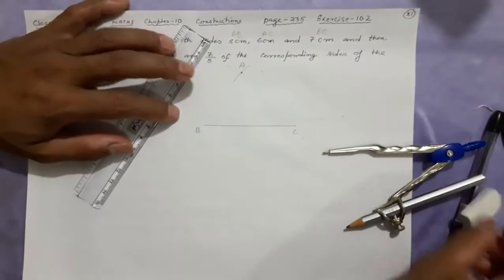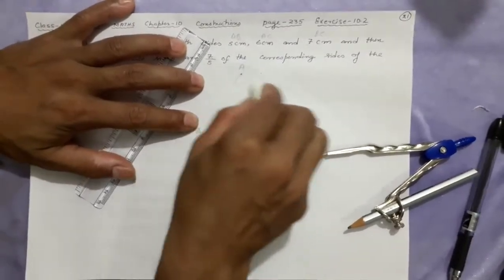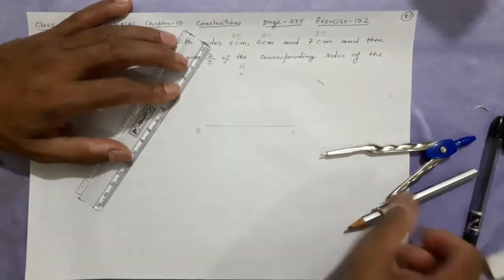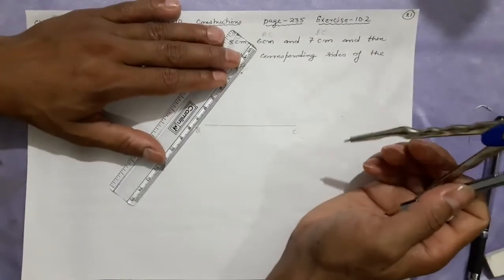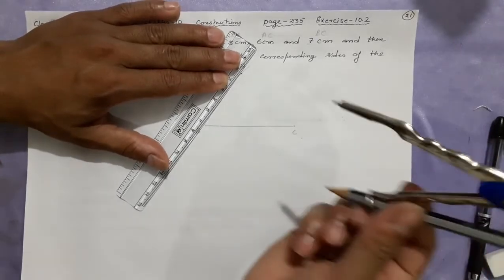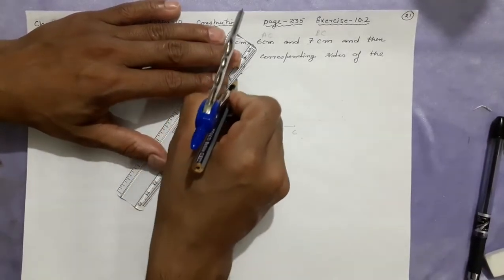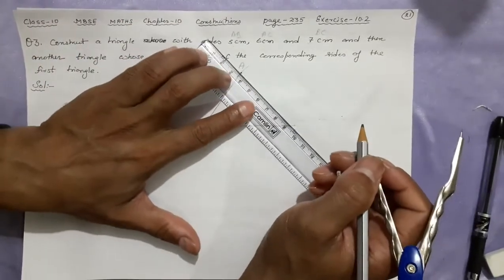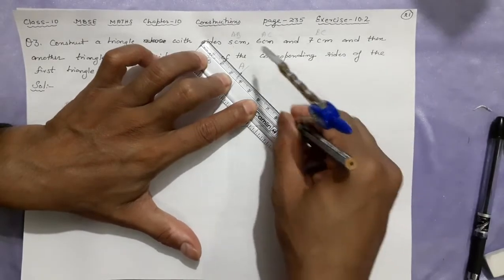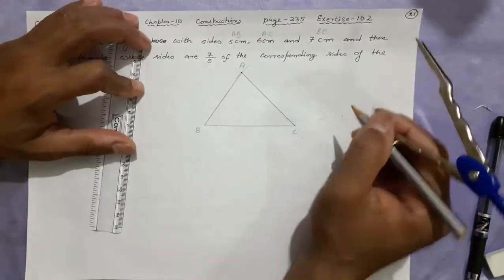These arcs are not very important. The extra arcs. Now what you do is you are going to join these lines. B with A and C with A. Done. Now your triangle is ready.